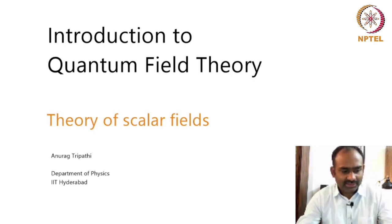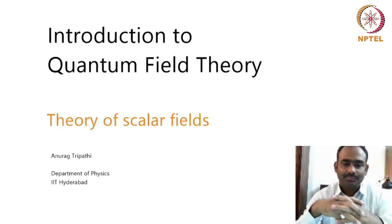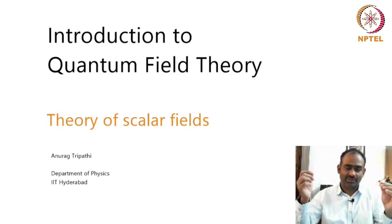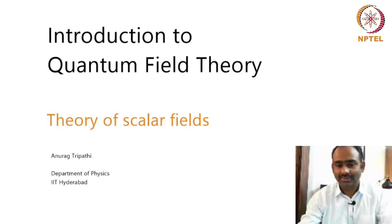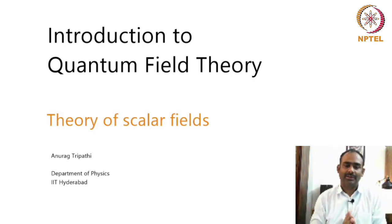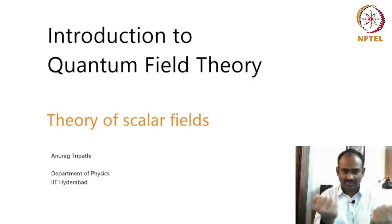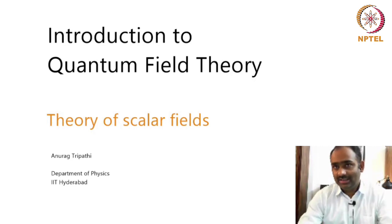To set the stage for this course, imagine this. You have an electron and a positron. A positron is the antiparticle of electron. These two are rushing towards each other at very high speeds, comparable to the speed of light, so really, really fast, which means that the total energy in this system is enormous. And they collide. When they collide, they annihilate each other — the electron and that positron no longer exist.